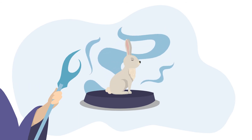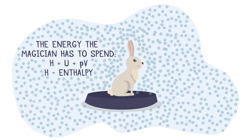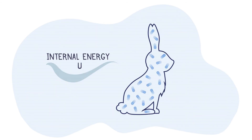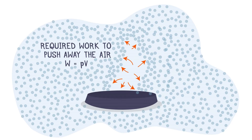The enthalpy of a system is the sum of the internal energy and the mechanical energy, which is the product of the pressure and the volume. In our case, the internal energy of the system is the rabbit, and the mechanical energy is the work we had to do to push the air fluid away in order to create the rabbit.